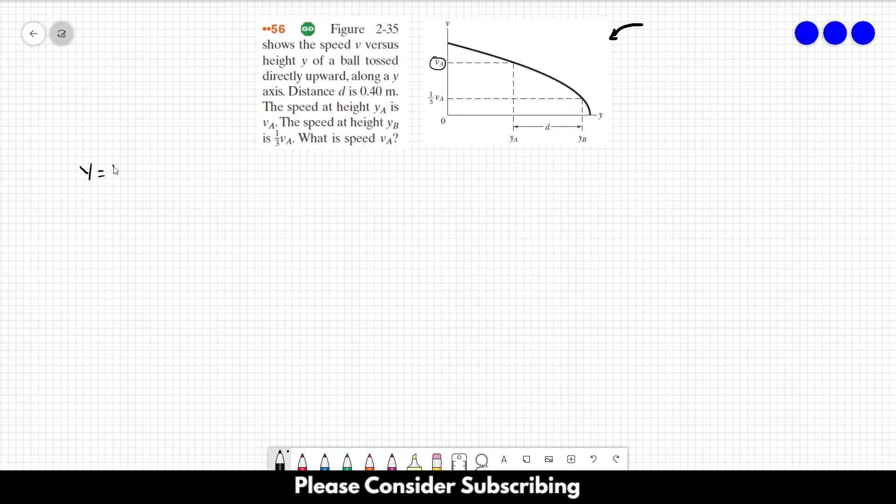When acceleration is constant we have three different equations we can work with. They are: Y equals YO plus VOT plus AT squared over 2, V equals VO plus AT, and V squared equals VO squared plus 2 times A delta Y. In this problem we will only use this last equation.